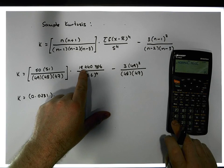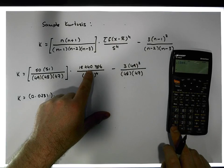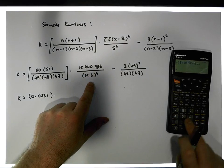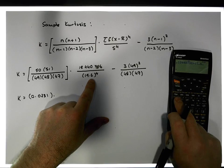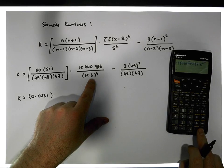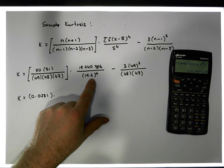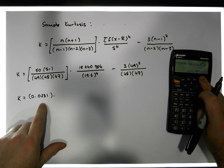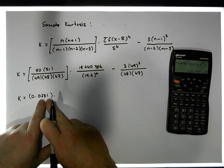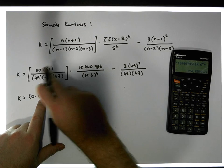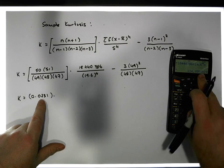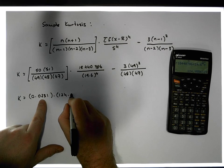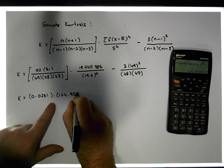That remaining factor is 18,440,786 divided by 19.6 raised to the power of four. This gives us a value of 124.9554 to four decimal places. So we have k equals 0.0231 times 124.9554.